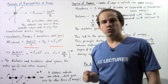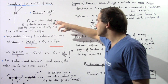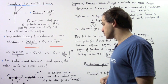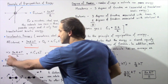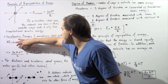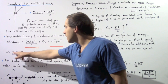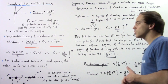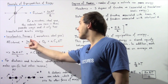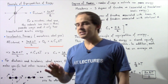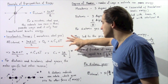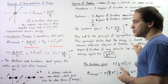The energy Q_V equals n × C_V × ΔT, where n is the number of moles, C_V is the molar specific heat at constant volume, and ΔT is the change in temperature. Since n and ΔT appear on both sides of the equation, they cancel out, giving us the result that for a monatomic ideal gas undergoing an isovolumetric process, the molar specific heat C_V equals (3/2) × R.